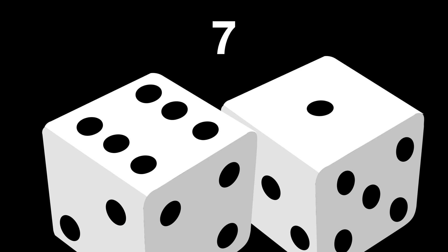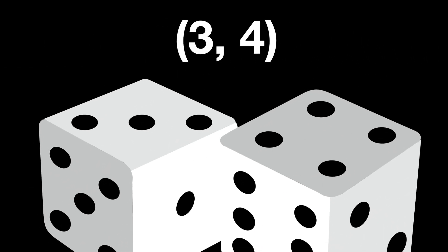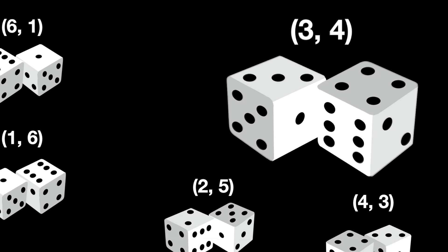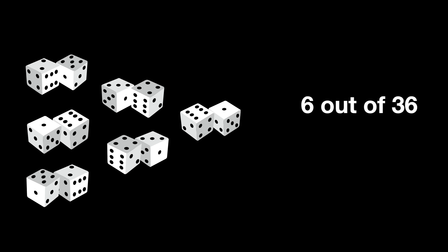If we take two dice, there are 36 possible outcomes. To find the probability of, say, rolling a sum of 7, Cardano would count the combinations that result in 7: 1-6, 2-5, 3-4 and the vice versa of each, which are 6 combinations. He'd find that the probability of rolling a 7 with two dice is 6 out of 36, or 1 in 6. It might seem obvious now, but it was innovative for the time.